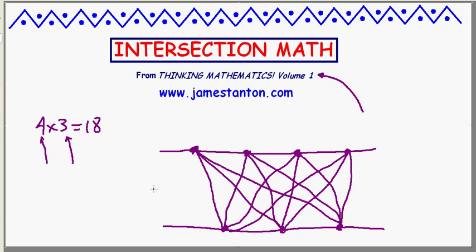So there's a diagram of something representing 4 times 3 in this thing called intersection math. And what am I going to count in intersection math? You've guessed it, the intersections: 1, 2, 3, 4, 5, 6, 7, 8, 9, 10, 11, 12, 13, 14, 15, 16, 17, 18. 4 times 3 is 18 in intersection math.